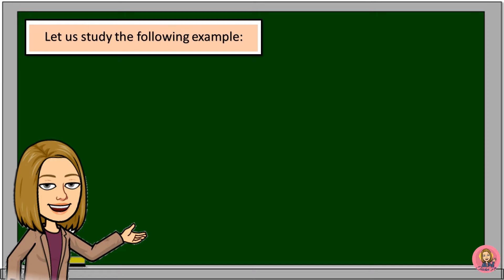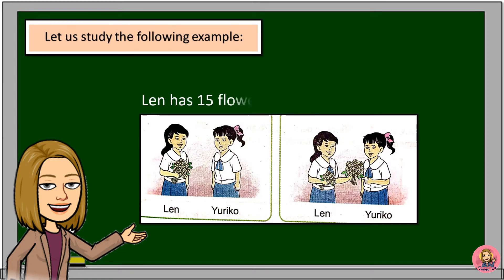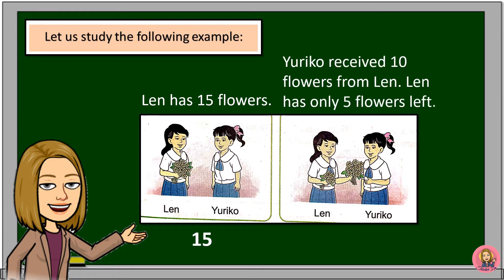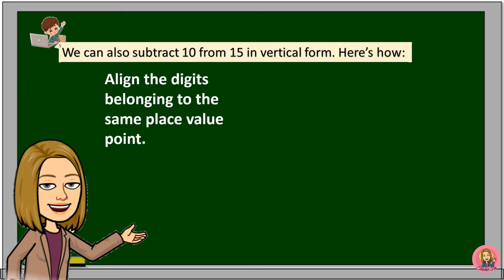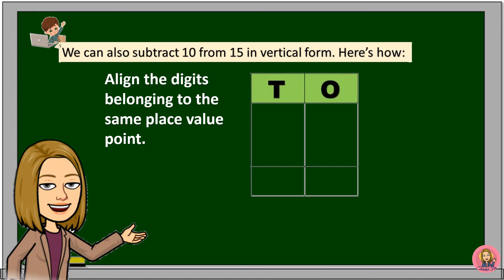Let us study the following example. Len has 15 flowers. Yuriko received 10 flowers from Len, so Len has only 5 flowers left. We can also subtract 10 from 15 in vertical form. Align the digits belonging to the same place value. This is our place value chart: 5 is in the ones place, and 1 is in the tens place.